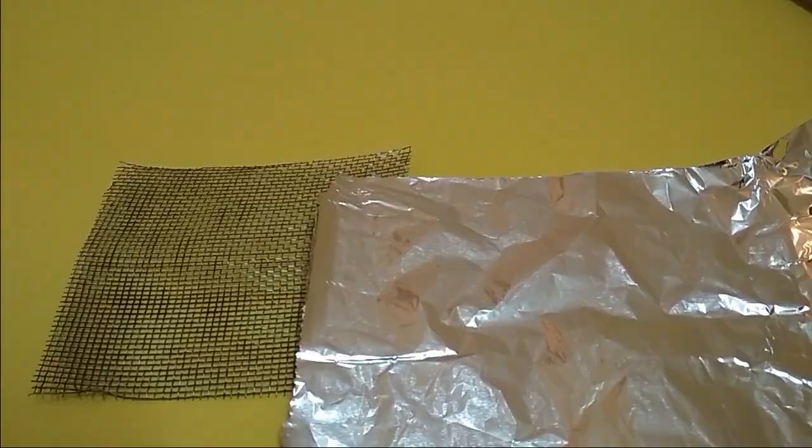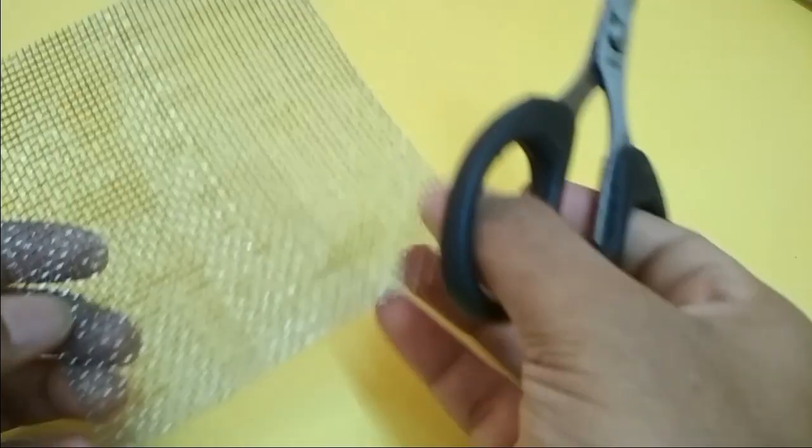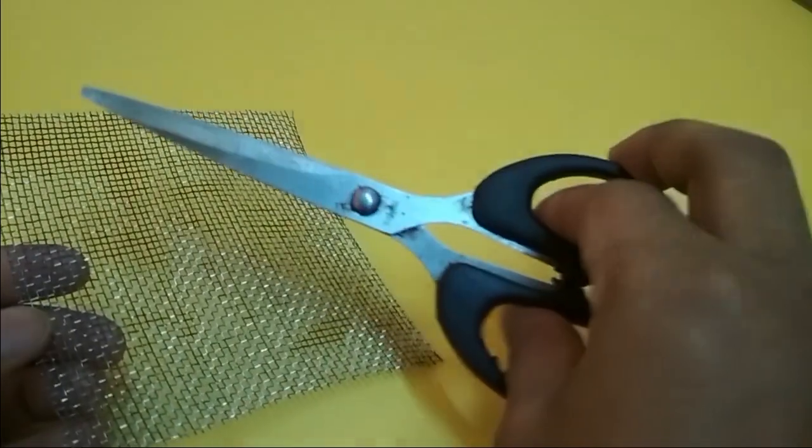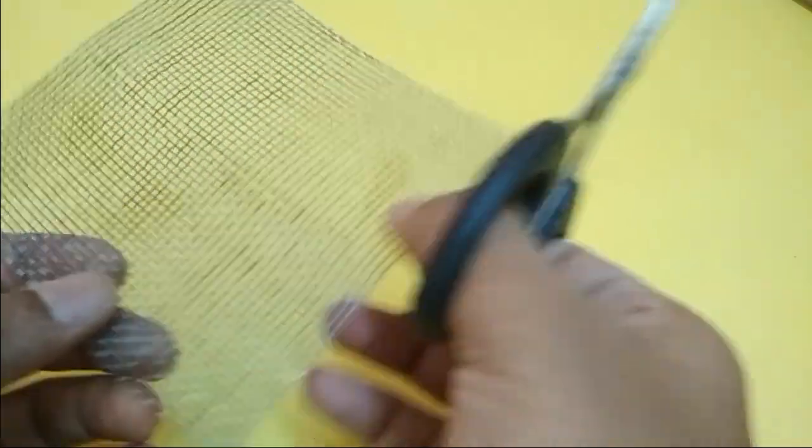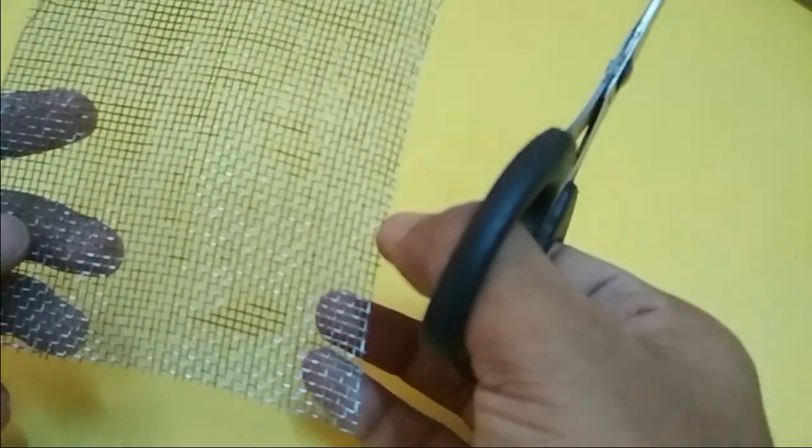The first thing I'm going to do is cut the wire mesh into some circles. I don't think scissors are necessarily the best tool for this, but I don't think I have a better tool.